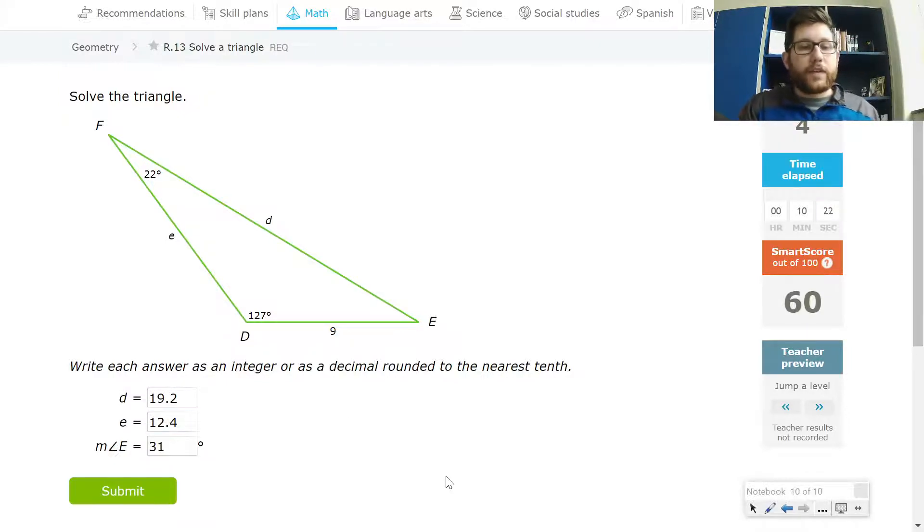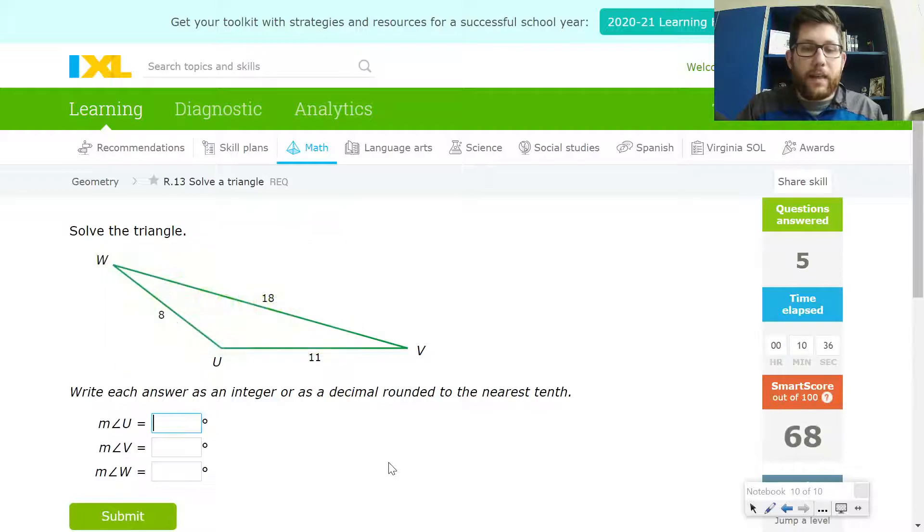Let's double check to make sure these answers make sense. So D should be the largest side, 19.2. That checks out. At 22 degrees, 9 should be the smallest side. That makes sense. 31 degrees, this would be the medium side. So that all seems to make sense. So I'm going to go ahead and submit that and that is correct.